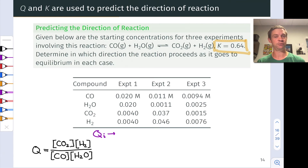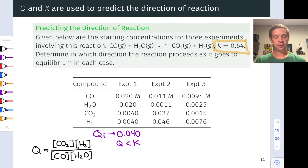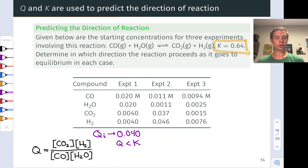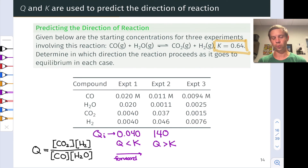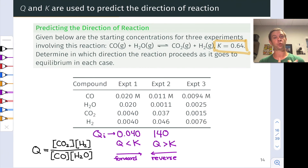For experiment 1, the initial Q is 0.040, which is less than K = 0.64, so the reaction goes forward spontaneously — Q must increase to reach K by generating products. For experiment 2, plugging in concentrations gives an initial Q of 140, which is much greater than 0.64, so this reaction mixture runs in reverse spontaneously, consuming products and forming reactants to reach an equilibrium state where Q equals K.